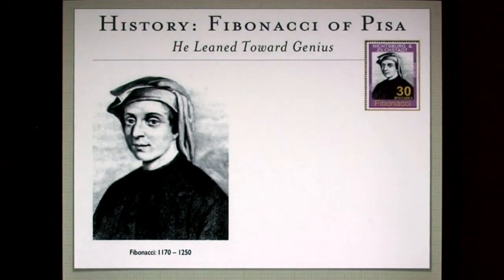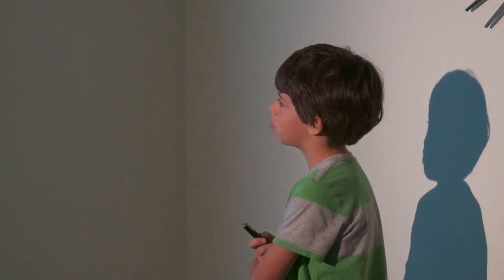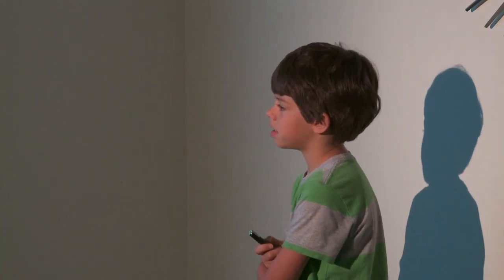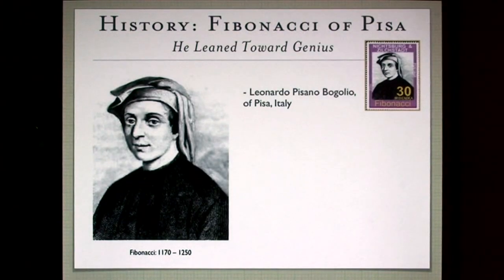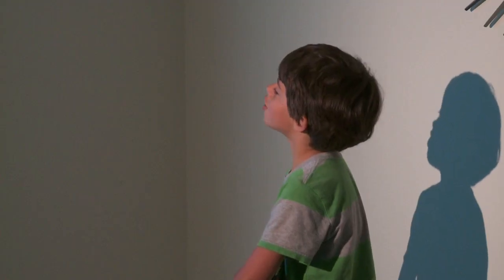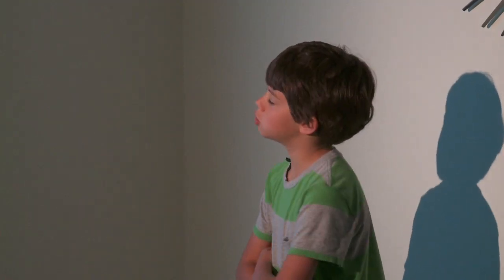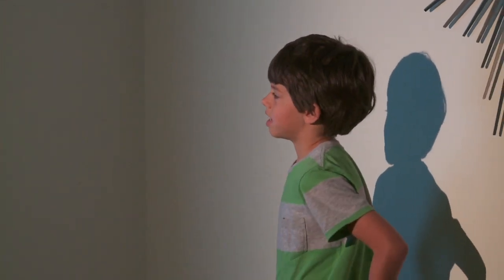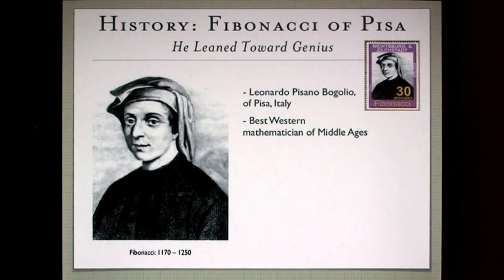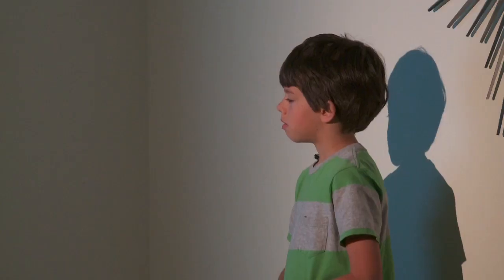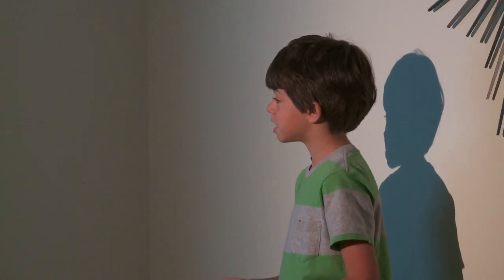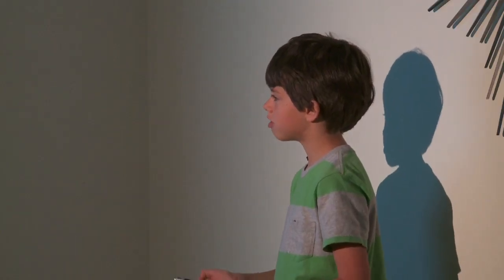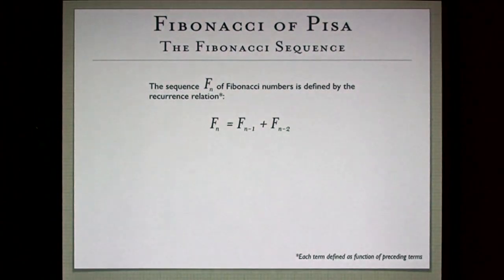First, I'm going to talk about Fibonacci. His full name is Leonardo Pisano Bogoglio of Pisa, Italy, and he was the best Western mathematician in the Middle Ages, but he was best known for the Fibonacci Sequence.